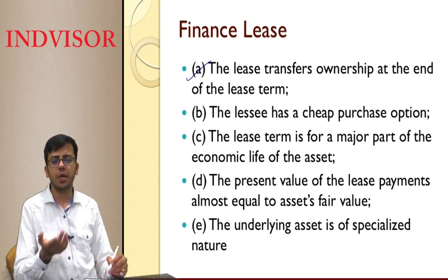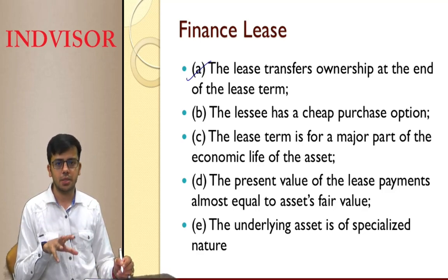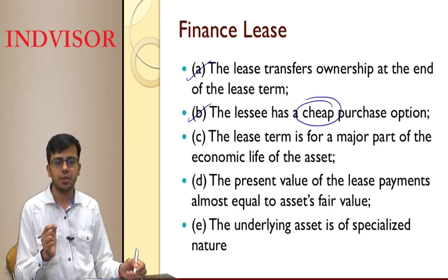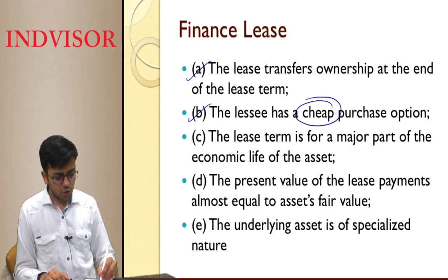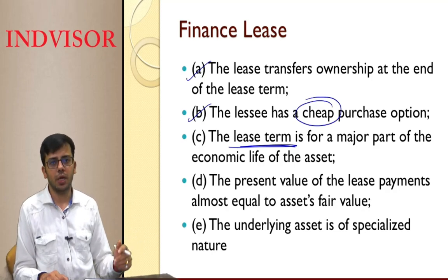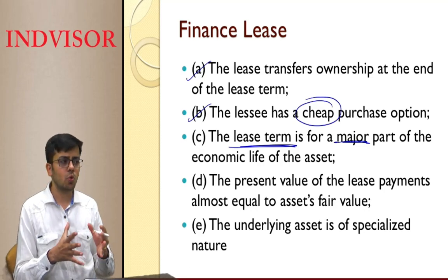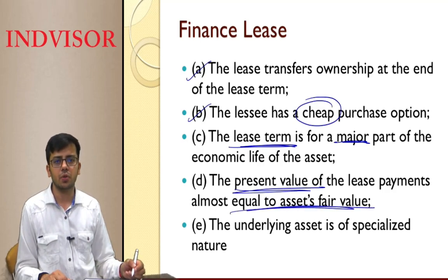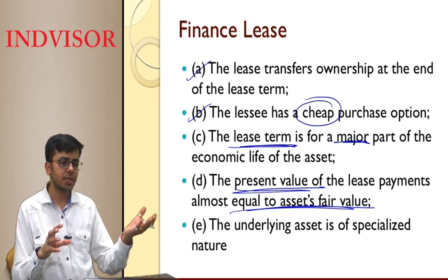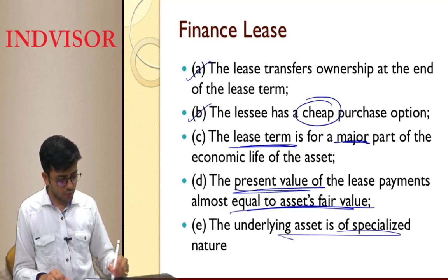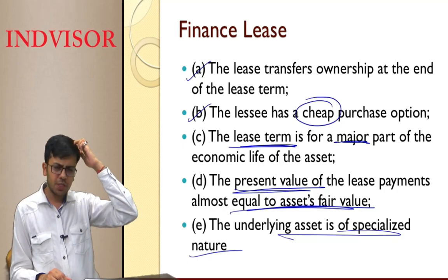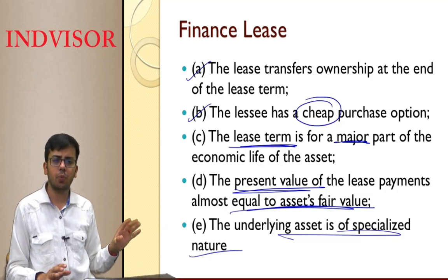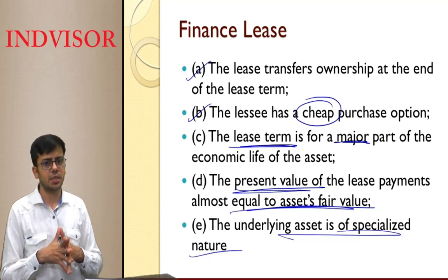The five indicators of a finance lease are: (1) ownership of the asset transfers to the lessee at the end; (2) the lessee has a purchase option at less than fair market value; (3) the lease term covers the major economic life of the asset (generally 90% or more); (4) the present value of lease payments is equal to the asset's fair value; and (5) the underlying asset is of a specialized nature specifically made for the lessee.